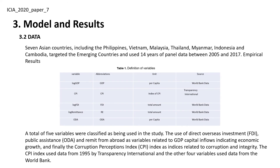Data: Seven Asian countries including the Philippines, Vietnam, Malaysia, Thailand, Myanmar, Indonesia, and Cambodia were targeted as emerging countries, using 14 years of panel data between 2005 and 2017.